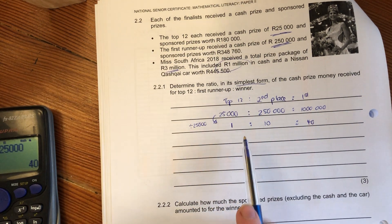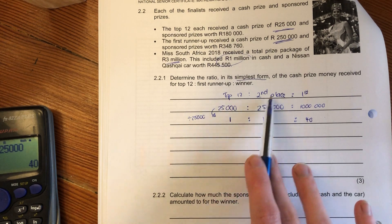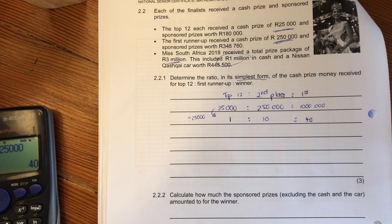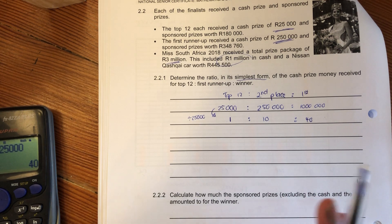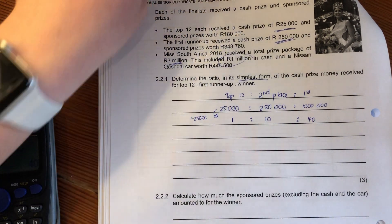Our simplest ratio is 1:10:40. If you're in the top 12 and didn't come second or first, you got 1. For every 1, the second place got 10 and first place got 40. That's what a ratio is. It's a three-way ratio but we can get there if we do things slowly and methodically.